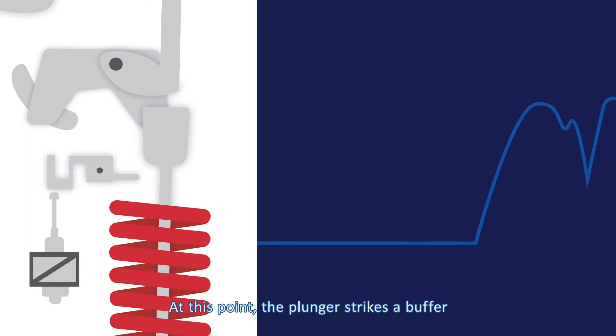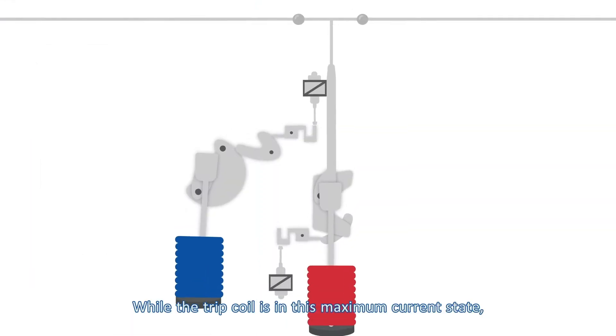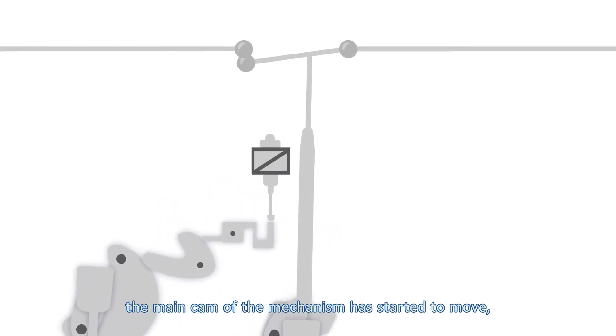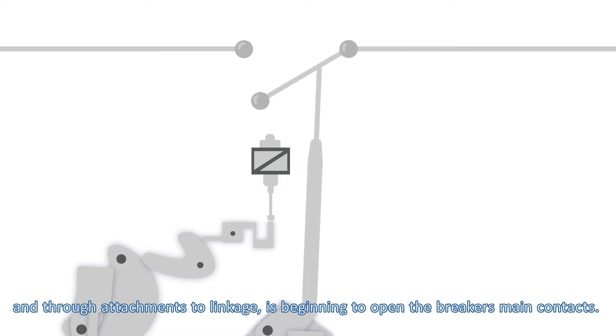At this point, the plunger strikes a buffer and begins to rise until maximum current is achieved. While the trip coil is in this maximum current state, the main cam of the mechanism has started to move and through attachments to linkage, is beginning to open the breaker's main contacts.